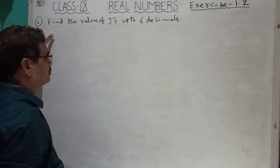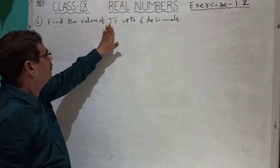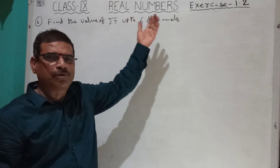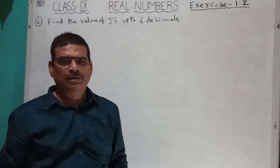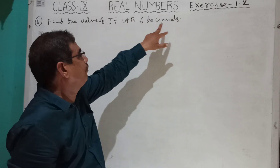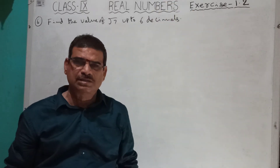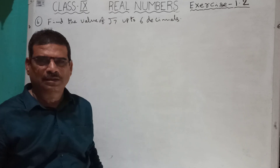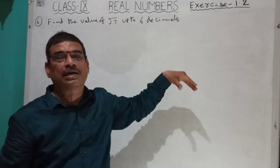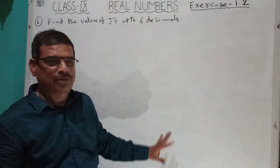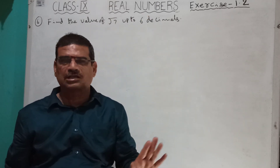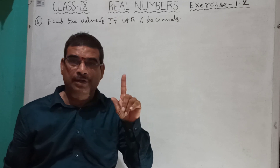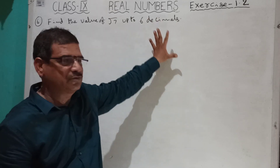Next question is the 6th one: find the value of root 7 up to 6 decimals. What I told in the previous question — you have to do the same procedure. But you have to find up to 6 decimals, meaning after the point you have to find up to 6 places. So this is a little bigger than the previous one. You have to remember the rules and regulations of the square root method — this is the only important point. If you remember those points, this is very easy.